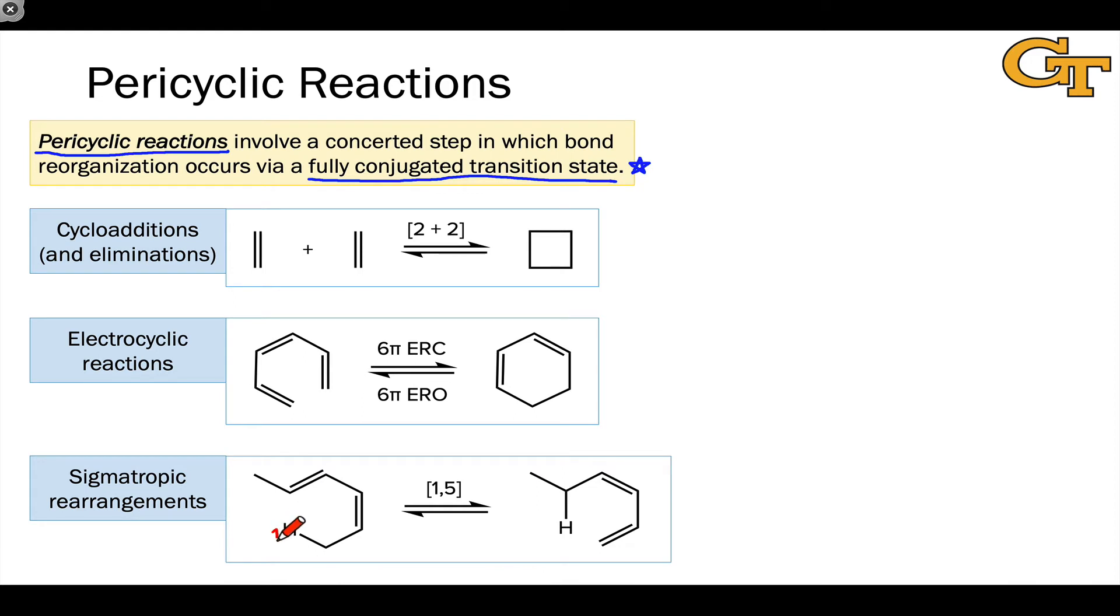For example here, this hydrogen we can label as atom number one on one end of this key migrating sigma bond, the CH bond right here, and we can number the atoms on the other side starting with this carbon and working around, including all of the atoms that connect the starting point and the ending point for the hydrogen. So we go all the way from carbon one to carbon five, and we can see that carbon five is where that hydrogen ends up. Because the sigma bond migrates from position one to position one on the hydrogen side, and from position one to position five on the carbon side, this is called a 1-5 sigmatropic rearrangement.